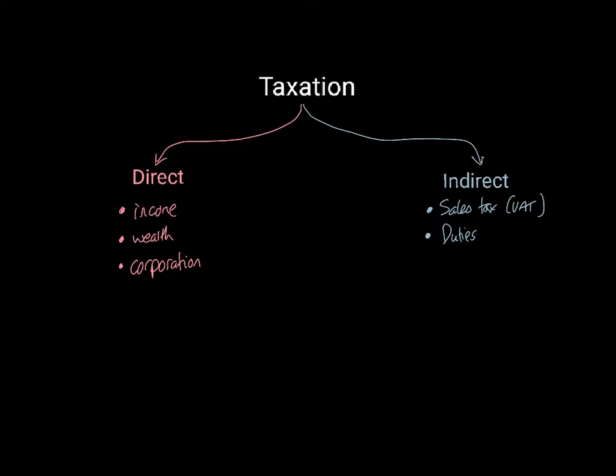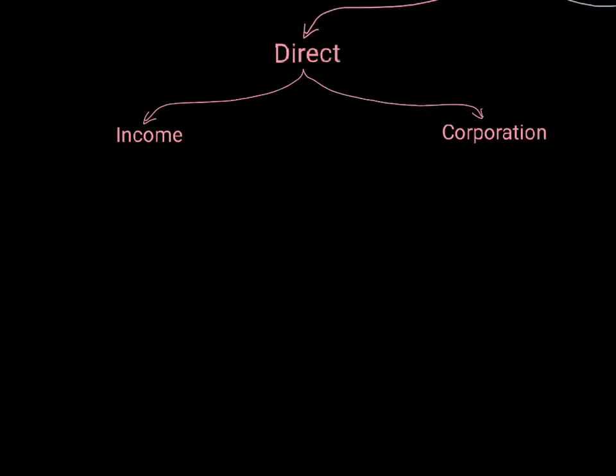So we're going to start by looking at the direct taxes - income, wealth and corporation - and see how those will probably affect the economy. And then we will look at indirect taxes after that. As we said before, direct taxes are generally income tax and corporation tax. There are wealth taxes in there as well, but you don't really need to worry about those too much at A-level and we'll focus on these ones primarily.